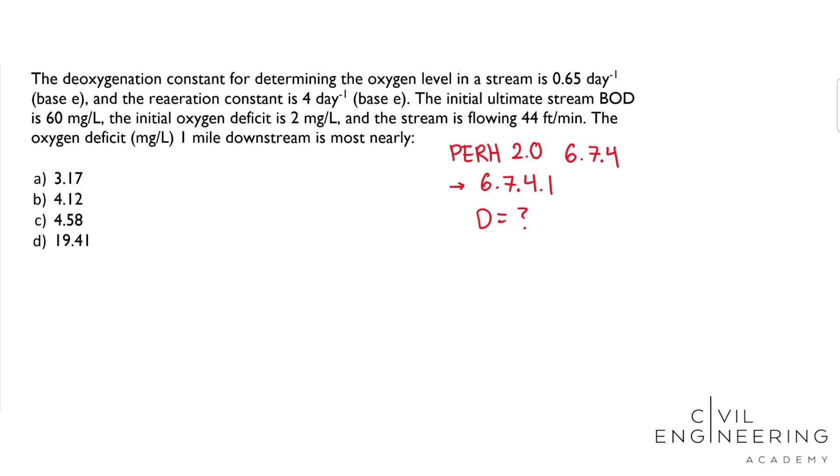DO is the dissolved oxygen concentration, and we don't really have that given. DA is initial dissolved oxygen deficit in the mixing zone, and we have an initial oxygen deficit of 2 mg per liter. So DA equals 2 mg per liter.